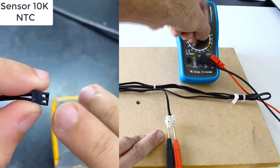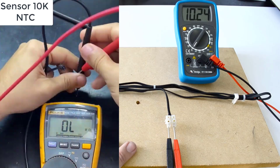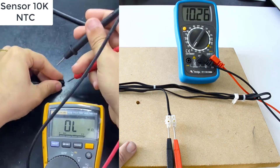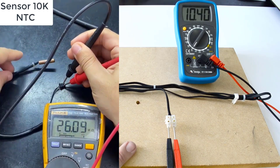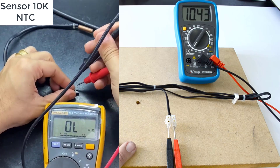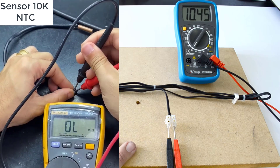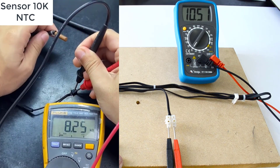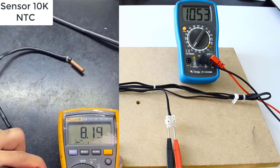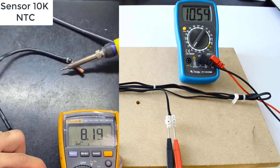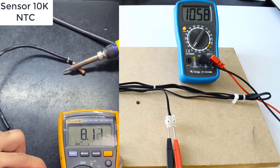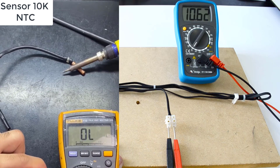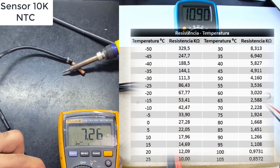For example, if you are going to take a reading of 10K, you can set it to 20 to 100K — a little above the value you are reading. This depends a lot on the equipment you have. In my case, I set it to the 20-kilohm scale to take a reading of a 10-kilohm component. On the multimeter, the value read from this sensor is around 10.9 to 11K.